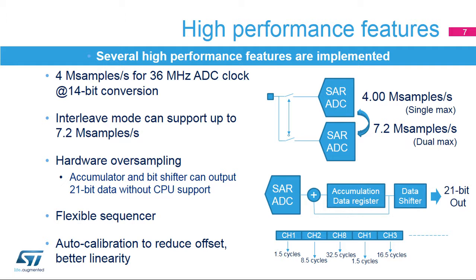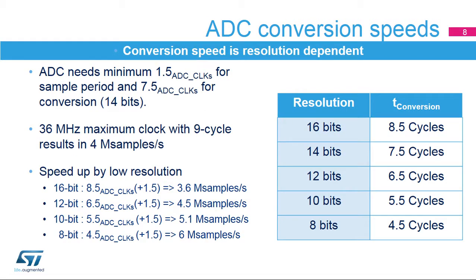The ADC offers an auto-calibration mechanism. It is recommended to run the calibration in the application if the reference voltage changes more than 10%, including emerging from reset or from a low-power state where the analog voltage supply has been removed and re-established. The ADC needs a minimum of 1.5 clock cycles for sampling and 7.5 clock cycles for conversion in 14-bit mode. With a 36 MHz ADC clock, it can achieve 4 megasamples per second.